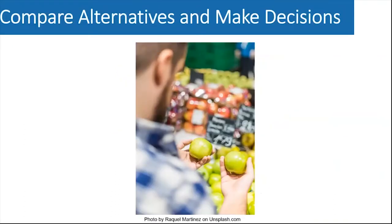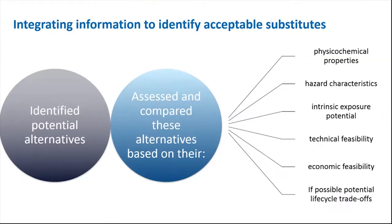First, we'll discuss various strategies for comparing alternatives, considering uncertainties and potential tradeoffs between options, as well as making a final decision about the availability of safer feasible alternatives. At this point in the assessment process, you should have identified and possibly conducted an initial screen of potential alternatives, and assessed and compared these alternatives based on their physiochemical properties, hazard characteristics, intrinsic exposure potential, technical feasibility, economic feasibility, and if possible, potential life cycle tradeoffs. You've gained knowledge about the merits and potential problems of the identified alternatives based on the endpoints and assessment criteria examined.